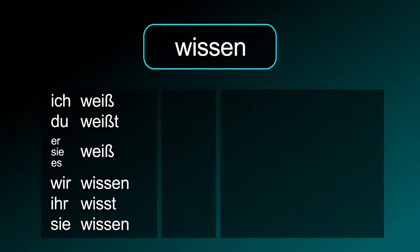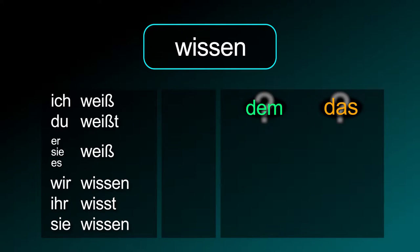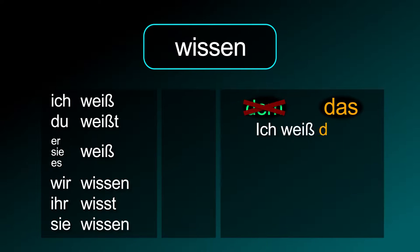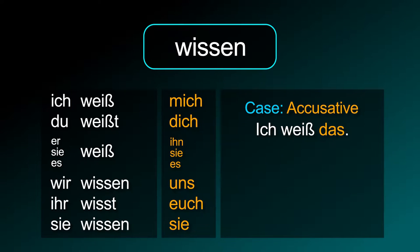Wissen conjugation: ich weiß, du weißt, er/sie/es weiß, wir wissen, ihr wisst, sie wissen. This verb needs the accusative case. Therefore, the correct way to say 'I know that' is ich weiß das.